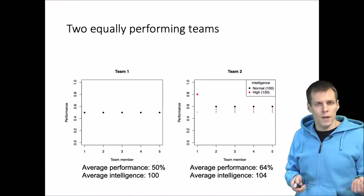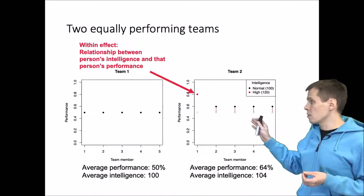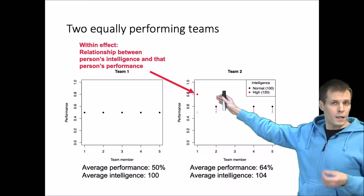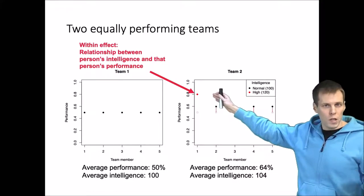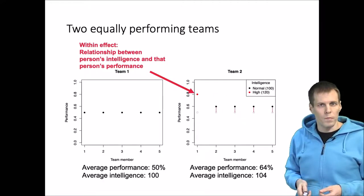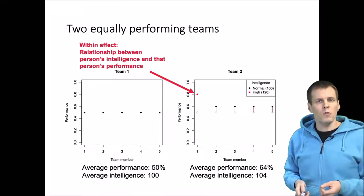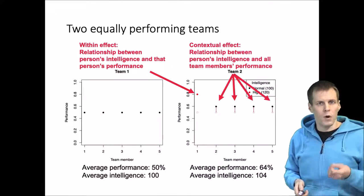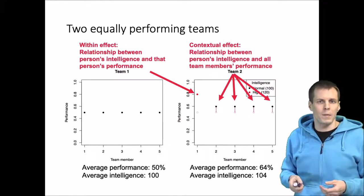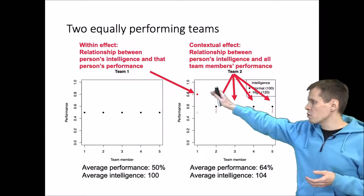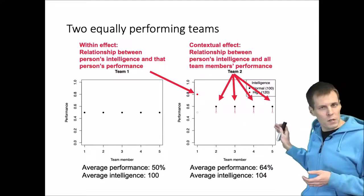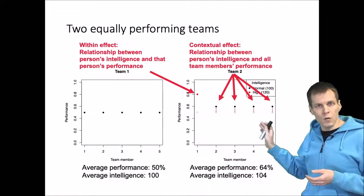So we have these two effects now. The within effect in this case is the individual's intelligence effect on the individual's performance — so this person is performing better because he or she is more intelligent than the other people. But there's also the contextual effect. The contextual effect is the smart individual's impact on the performance of others, for example by enabling better coordination or providing leadership. So when we add a smart person to the team, the performance of everyone else increases as well. And this is the contextual effect.